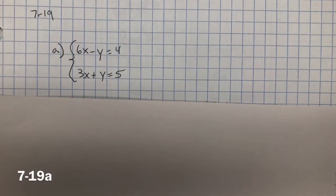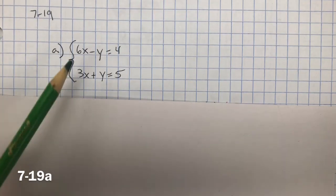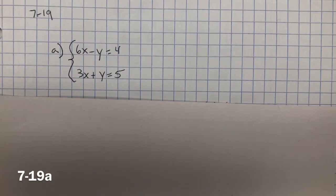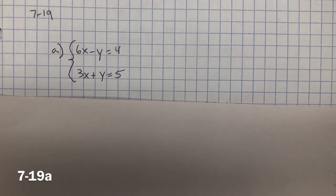For 7-19, you need to match the system of equations in the left column with its solution in the right column. There's several ways that I could solve these systems. One would be to get both of these equations in slope-intercept form, y equals mx plus b, and then set them equal to each other, and then I can find the solution that matches on the right side.